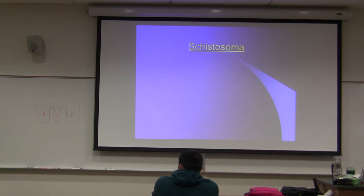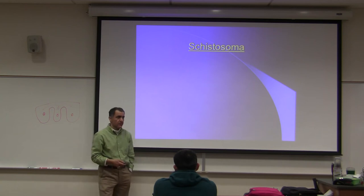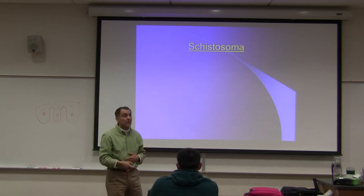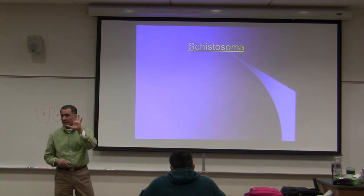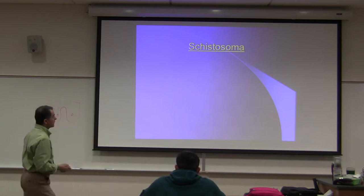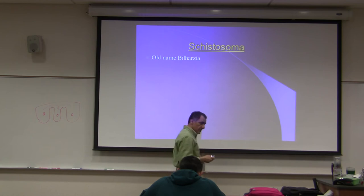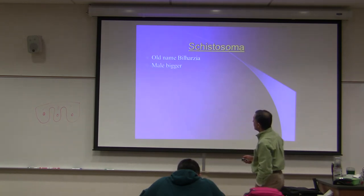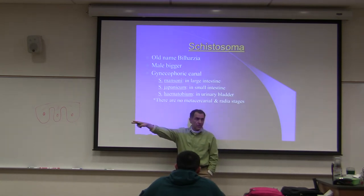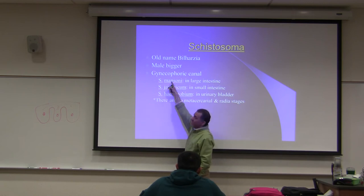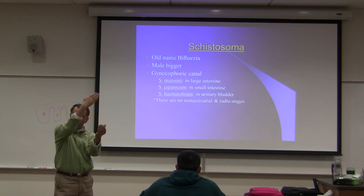Schistosoma is a devastating parasite. It's one of those six organisms that the World Health Organization says are killing people on planet Earth. We should tackle these six diseases. Out of those six diseases, five of them are parasites - five of them you are studying in this class. Schistosoma's old name is Bilharzia, named after the scientist who discovered its life cycle. The male is bigger. We have male and female on your slide collection. The male has a structure called the gynecophoric canal.